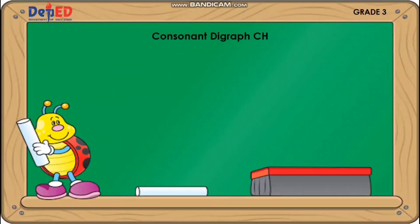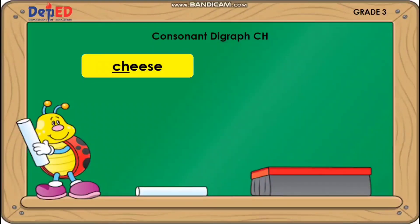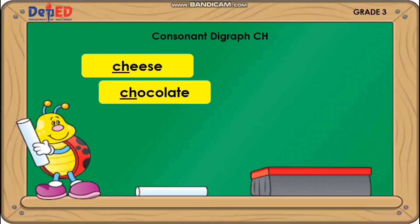The following are words that begin with consonant digraph CH: Cheese. Chocolate. Cheek.